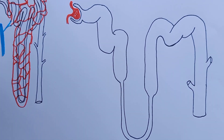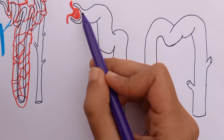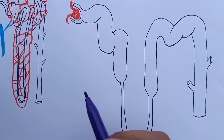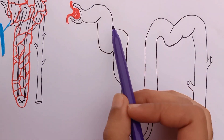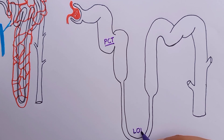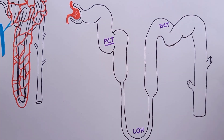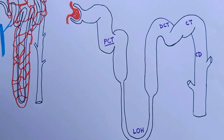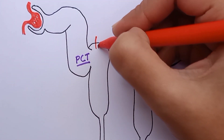The first step in urine formation is filtration of large amounts of fluid through glomerular capillaries into Bowman's capsule. As the glomerular filtrate enters the renal tubule, it flows sequentially through the proximal convoluted tubule, the loop of Henle, the distal convoluted tubule, the cortical collecting tubule, and finally the medullary collecting duct before being excreted as urine. Along this course, some substances are selectively reabsorbed from tubules back into the blood, whereas others are secreted from the blood into the tubular lumen.